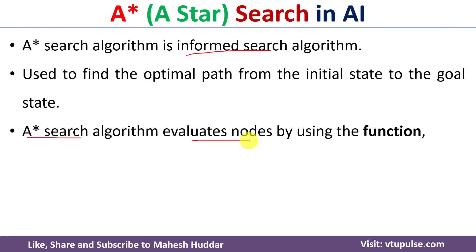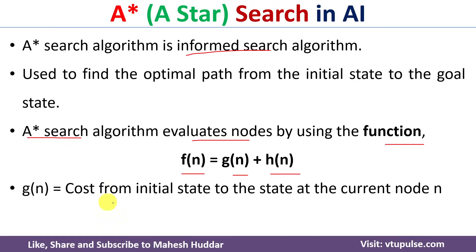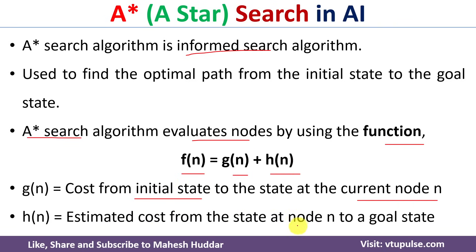In the A* search algorithm, the cost of each node is evaluated using the function: f(n) = g(n) + h(n), where g(n) is the cost from the initial state to the current node n, and h(n) is the estimated cost from node n to the goal state. Using these two values, we calculate the cost of each node, select the minimum-cost node, and repeat until we reach the goal node.